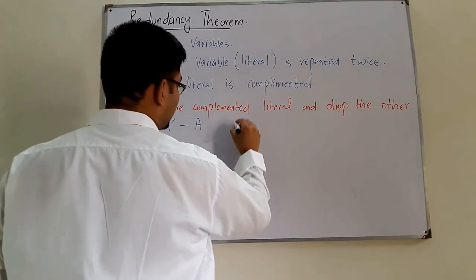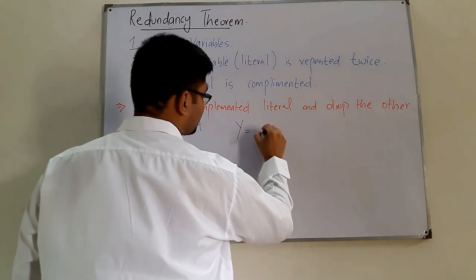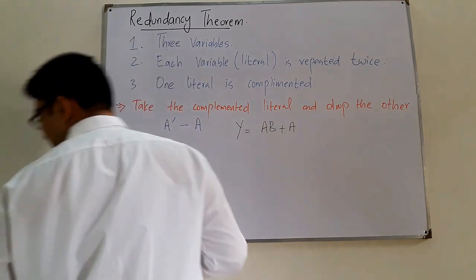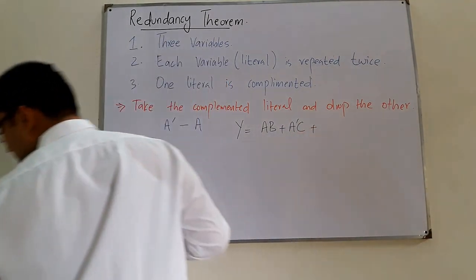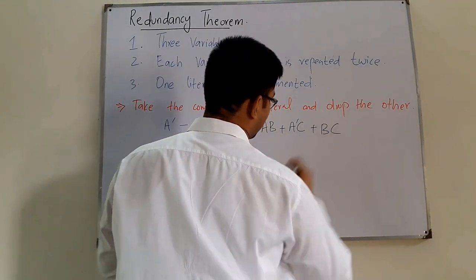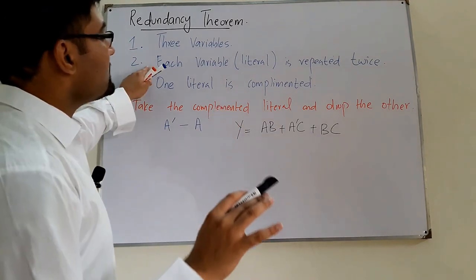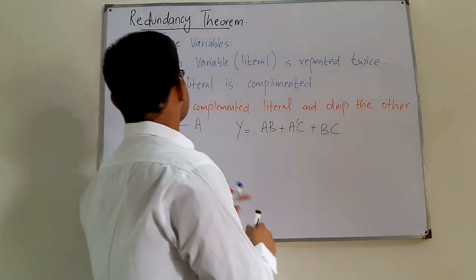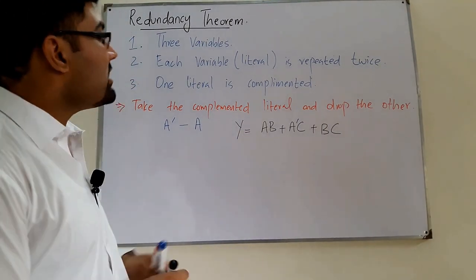Let's do an example. If Y is a function given as AB + A'C + BC, we check the conditions: three variables — yes; each variable is repeated twice — yes; one literal is complemented — yes, A is complemented.